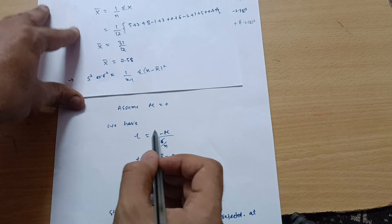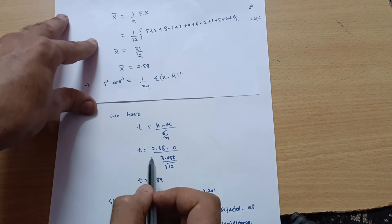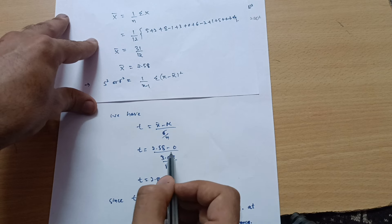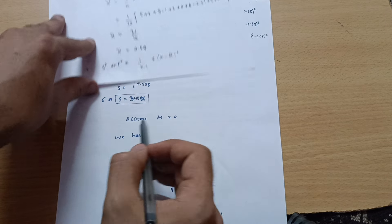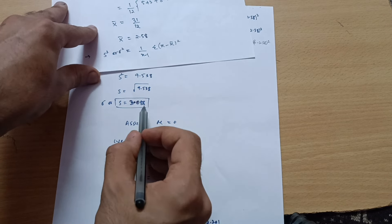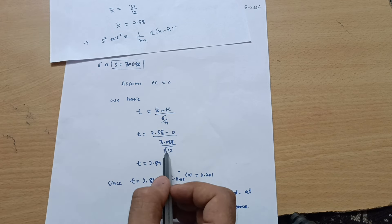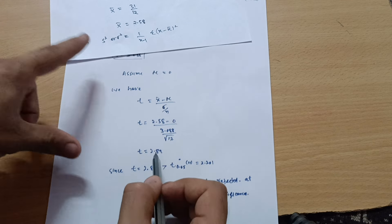So, t is equal to x bar, we have calculated 2.58. So, 2.58 minus 0 divided by sigma, sigma value we have calculated 3.088. So, 3.088 divided by root of 12, n is the 12 sample value. So, t is equal to—once you will calculate it, you will get 2.89.